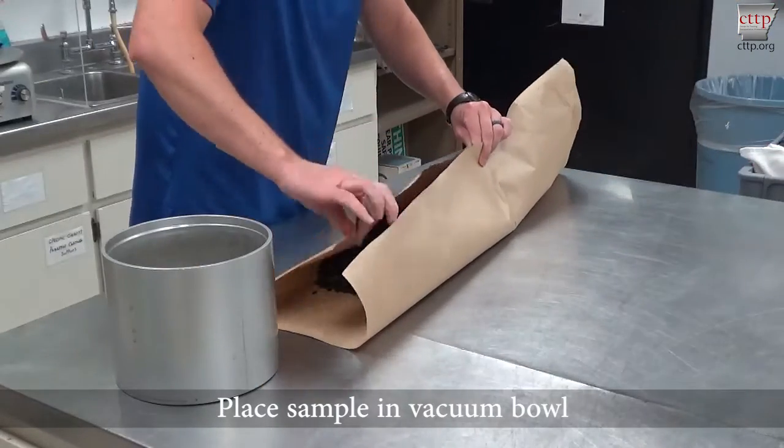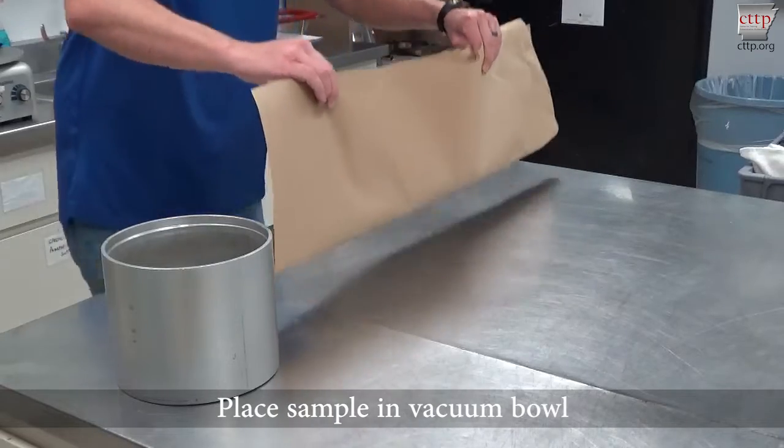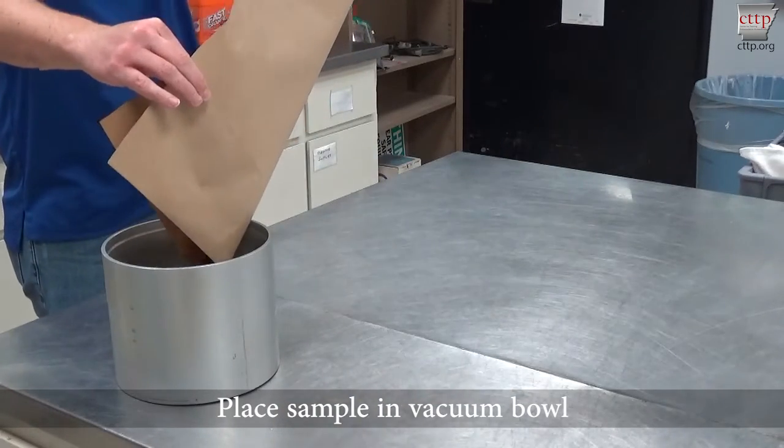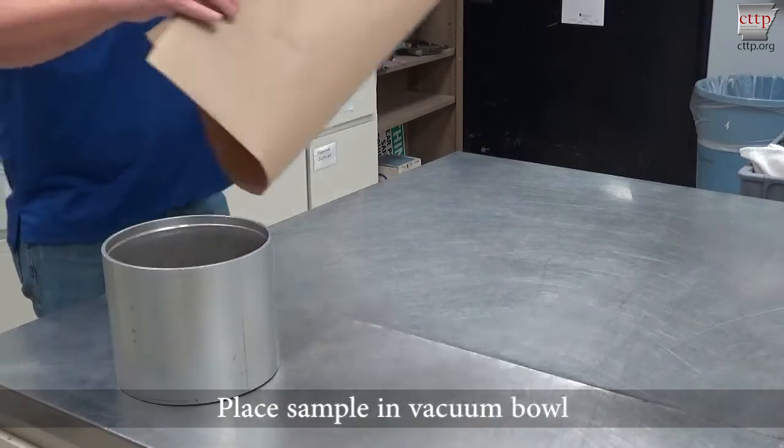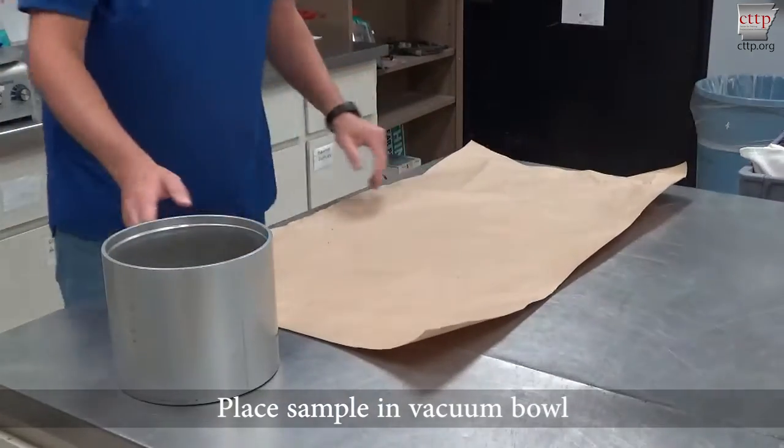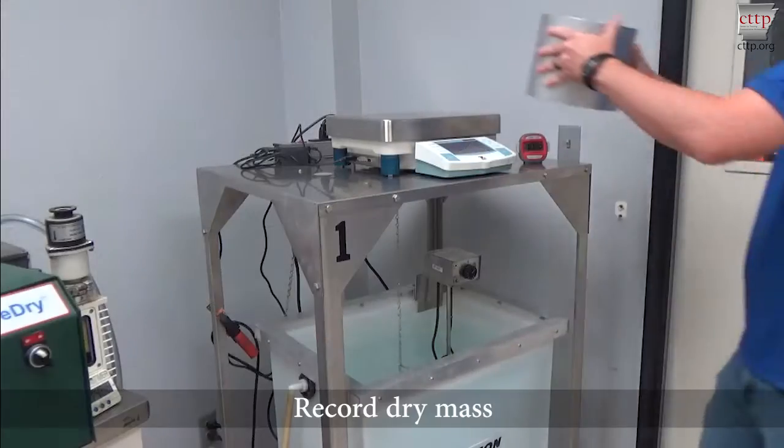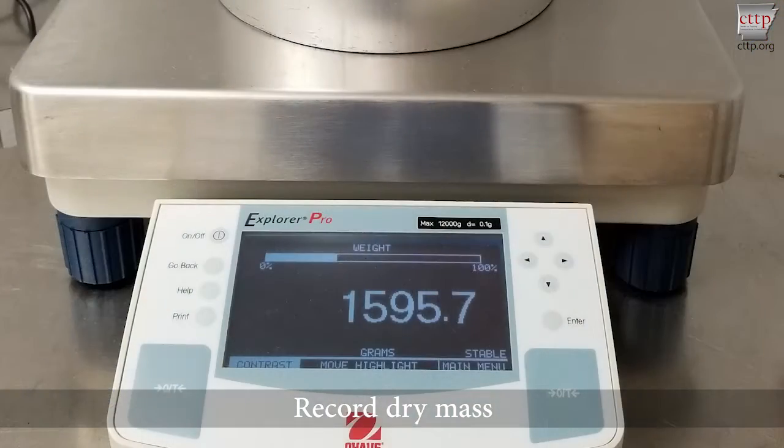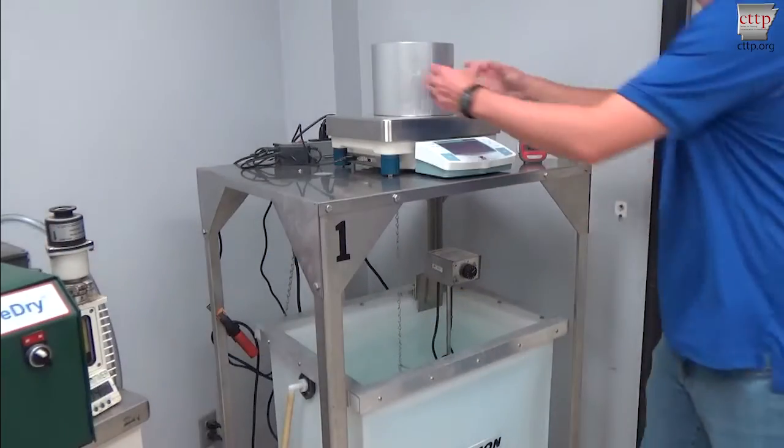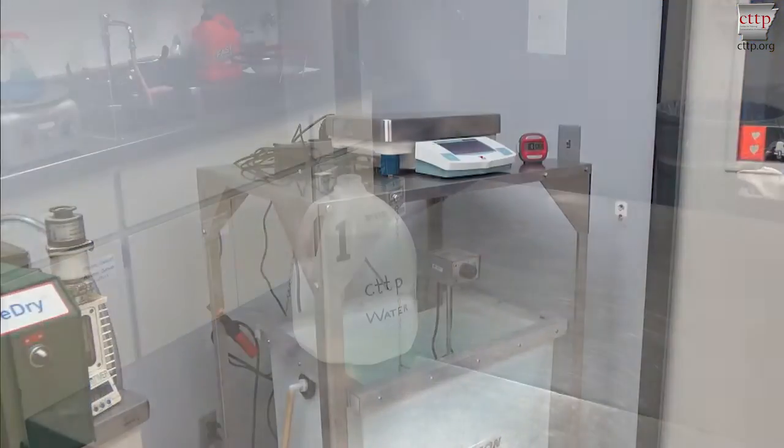Place the cooled asphalt sample in the vacuum bowl. Place the vacuum bowl with the sample on the scale platform and record the dry mass of the asphalt sample. If a tare weight was recorded, subtract the tare weight from the weight of the vacuum bowl and sample to obtain the dry weight of the sample.